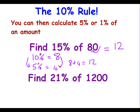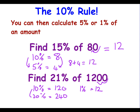Let's try another slightly tricky one: 21% of 1,200. Well, I know 10% is 120, so 20% must be 240. I don't want 20%, I want 21%. To find 1%, divide by 100 to get 12. So to get my 21% I combine my 20% and my 1%: 21% is 252.